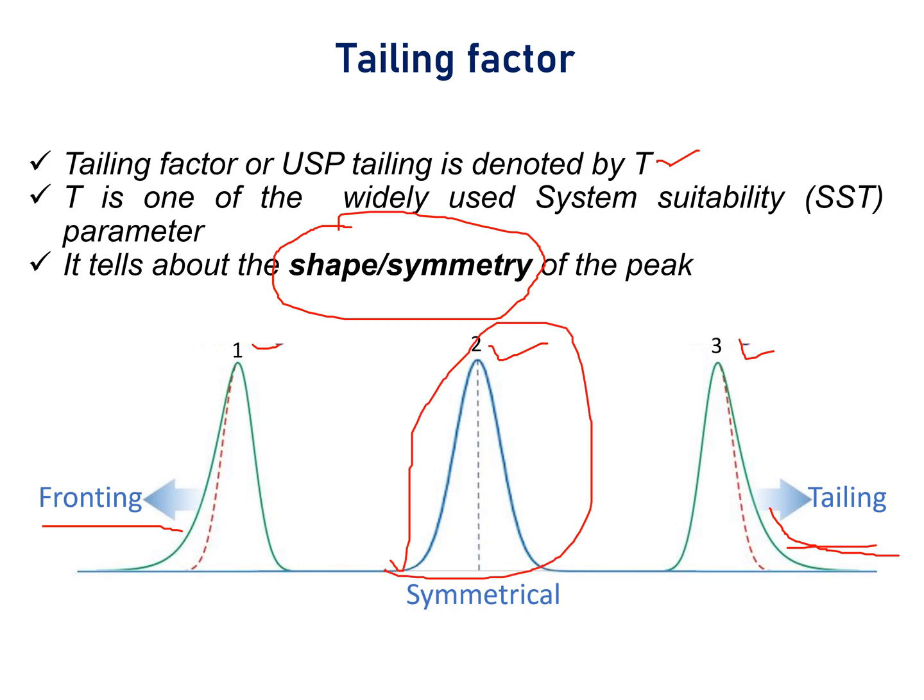Now the question is: can a chromatographer get an ideal peak in all conditions? The answer is no. So the next question is: how much tailing is acceptable? I am going to discuss that in the next slide.